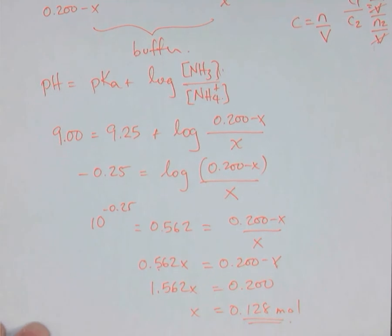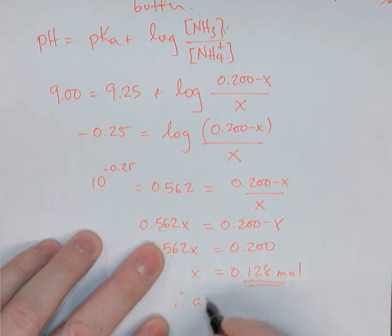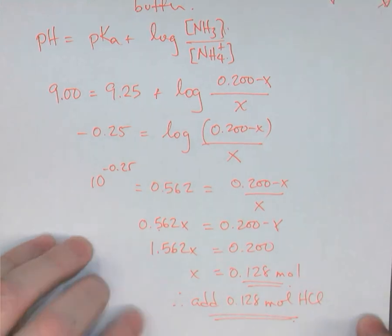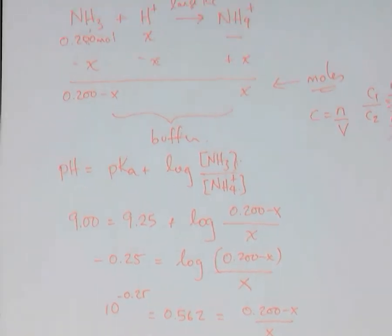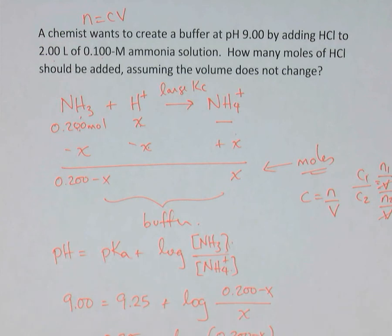Therefore, add 0.128 moles of HCl to the ammonia to create the buffer at pH 9. This is a slightly different buffer preparation — adding strong acid to a weak base — which is similar to a pH titration problem. There are the buffer introduction questions, useful for either introduction or review.